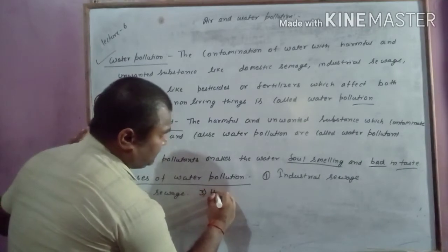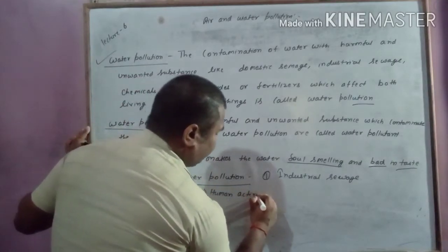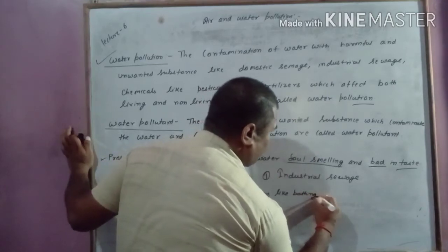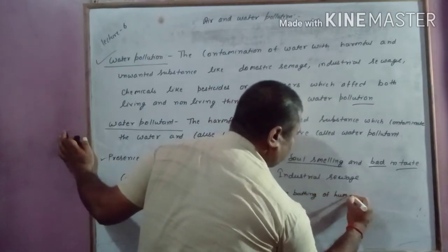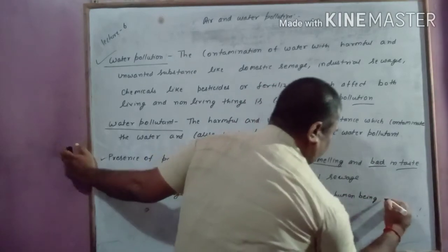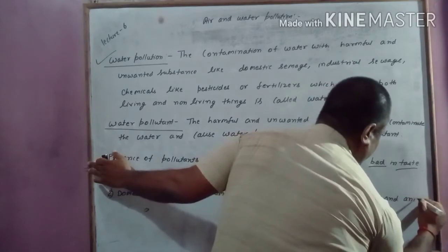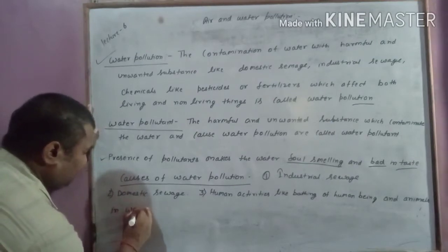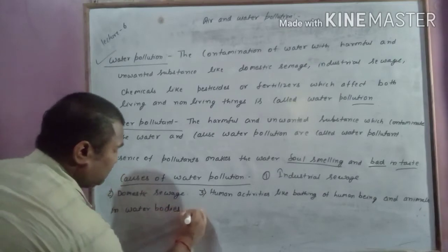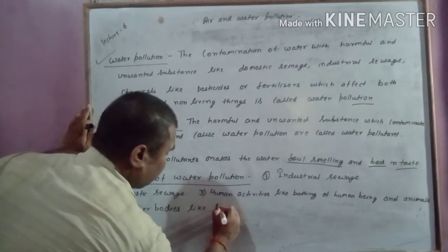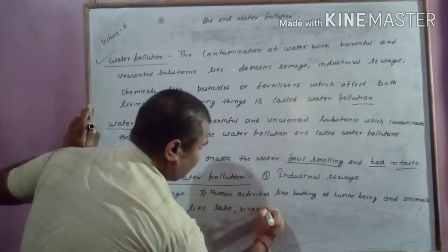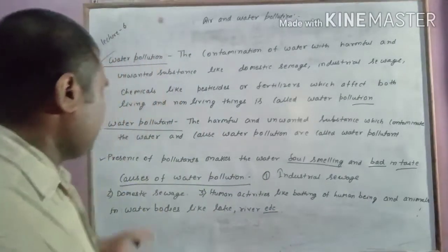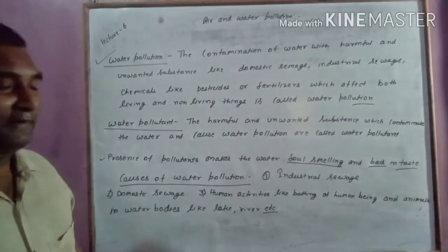Third is human activities. These activities include bathing of human beings and animals in water bodies like lakes, rivers, etc. Human activities are also responsible for contamination causing water pollution.